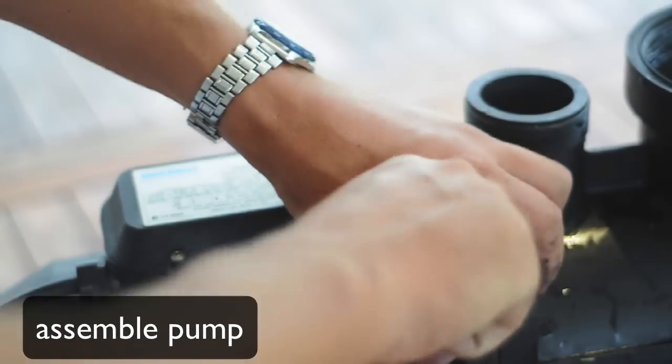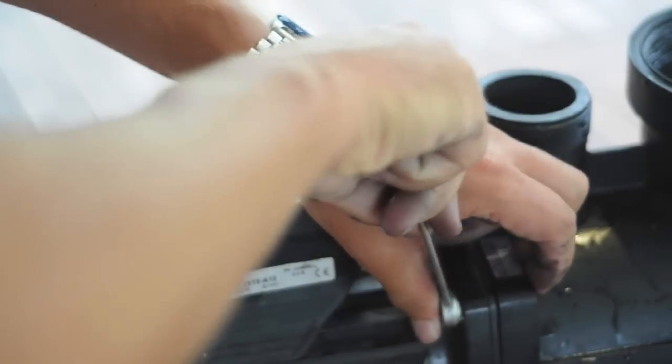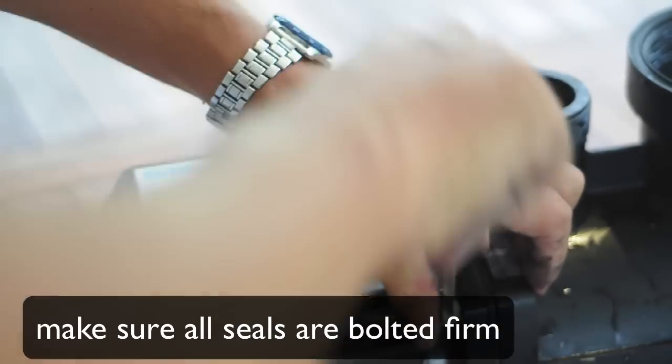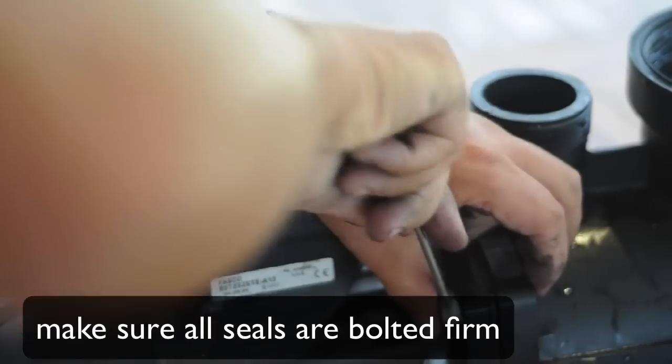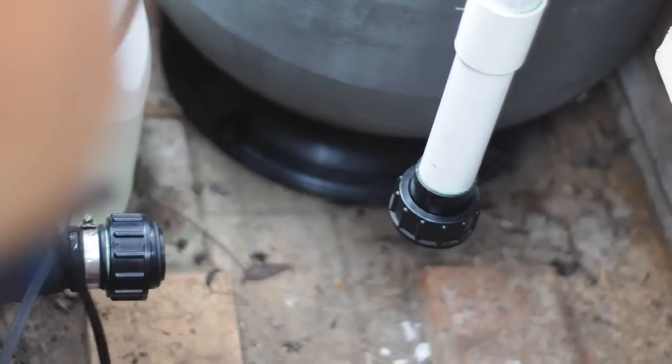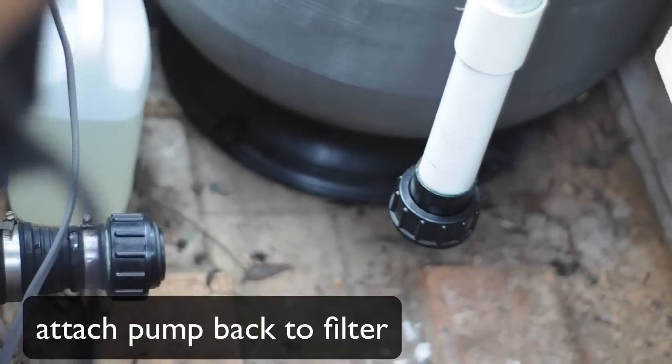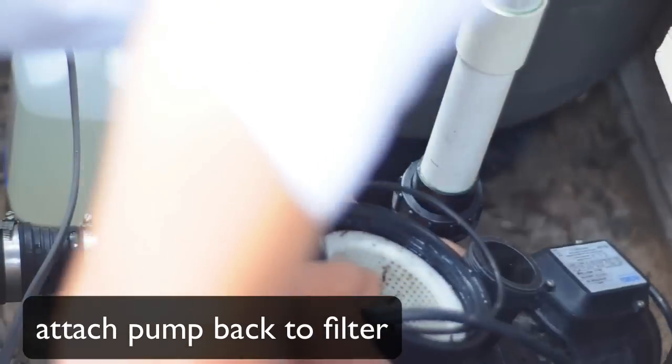It's really important that we bolt the screws back firmly and tightly. Not over tight, but firm enough to make sure the seals are nice and firm. This prevents air rushing through the seals and water running through. Next, attach the pump back to the filter.